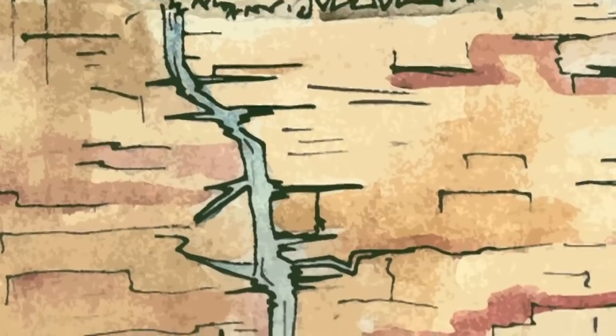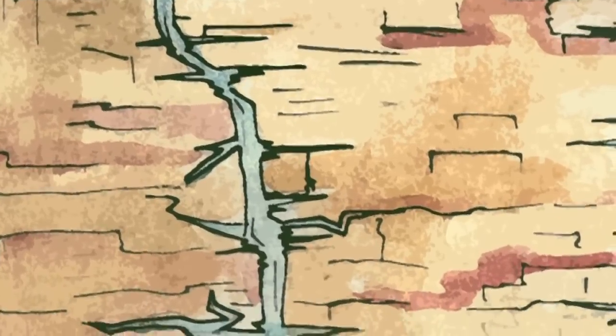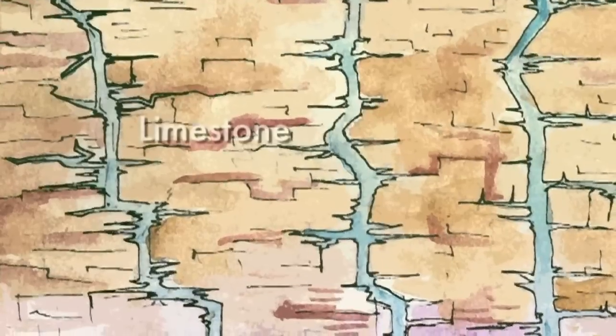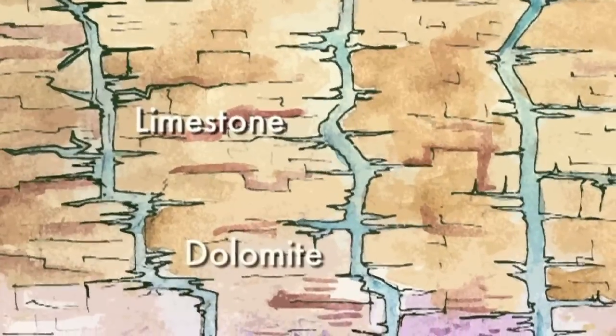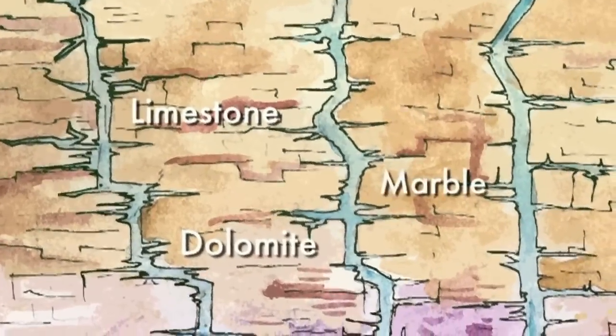It's a three-dimensional landscape developed on and in a rock that can be dissolved — like limestone, dolomite, marble.